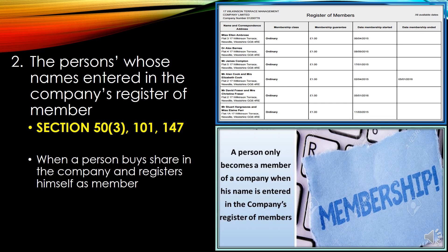Who is the member again? A member of the company is the person whose name is entered in the company's register of members. This is provided by section 50, subsection 3, section 101, and section 147 of the Companies Act — whose name is entered in the company's register of members.